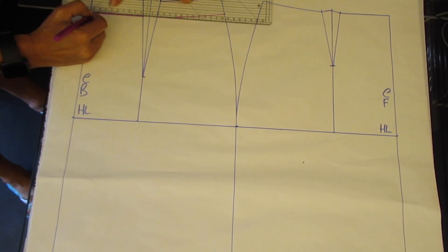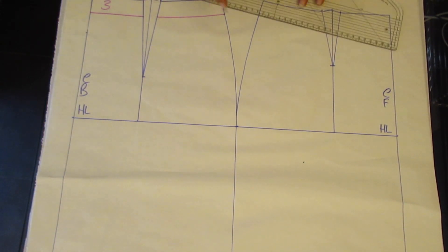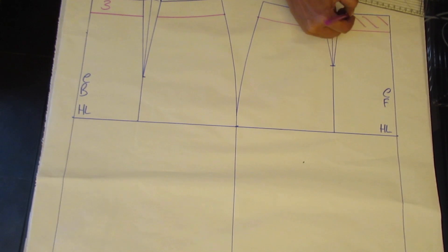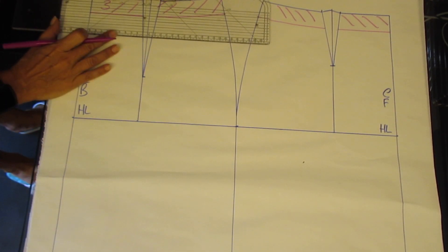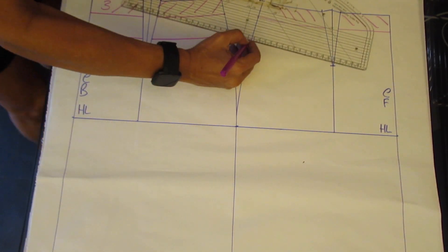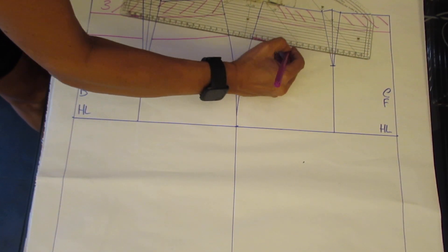Lower the waistline 3cm front and back parallel to the top waistline edge. Draw in your waistband, this sample has a 4cm waistband parallel to the top edge.